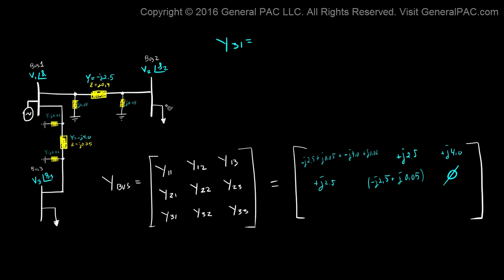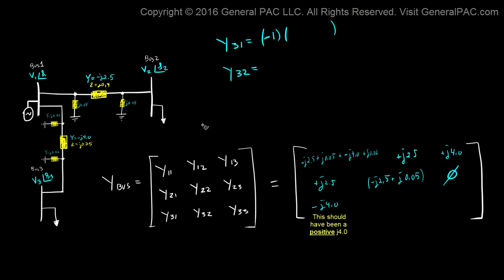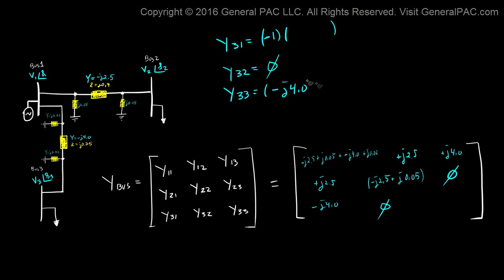Y31 equals the admittance from bus 3 to bus 1. Being an off-diagonal element, that gives negative J4.0 with the negative sign applied, placing the result in the matrix. Y32 is the admittance from bus 3 to bus 2 — nothing connects them, so Y32 equals 0. Y33 sums the admittances connected to bus 3: negative J4.0 plus J0.02. That completes the Y bus matrix for this example.